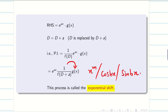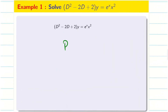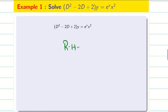After the exponential shift, the right hand side will have either x^m or cos(bx) or sin(bx). If you have cos(bx) or sin(bx), it becomes Type 2. If you have a polynomial, it becomes Type 3, and we solve as usual. Now let us go into the first problem. Here the RHS is e^x into x².